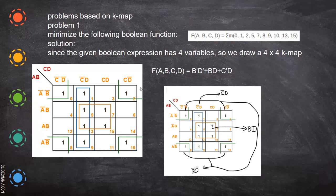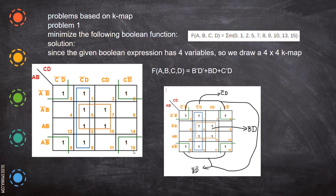Now we'll write the K-map and fill in the combinations: D-bar, C-bar, C D, and C D-bar. We write the position numbers 0 to 15 in the corner to make filling easy. For the given minterms — 0, 1, 2, 5, 7, 8, 9, 10, 13, 15 — we write a one at each corresponding position in the K-map.